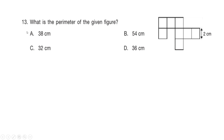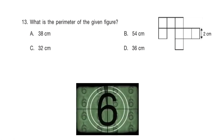Next question: What is the perimeter of the given figure? One side of each box in the figure is 2 centimeters. Is it option A: 38 cm, option B: 54 cm, option C: 32 cm, or option D: 36 cm? Your time starts now.